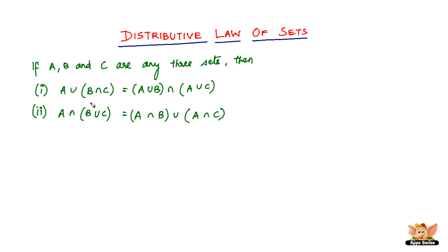Now let us look into the intersection operation on sets. We have A intersection of B union C, then it will be equal to A intersection B union of A intersection C. So both of these laws say that the union operation on sets and the intersection operation on sets, both of them are distributive.